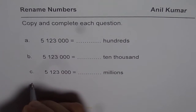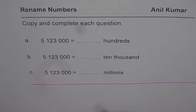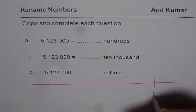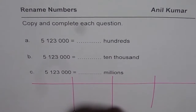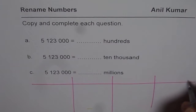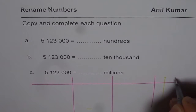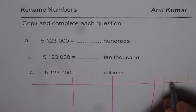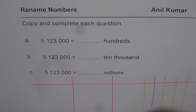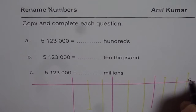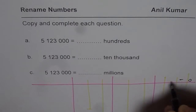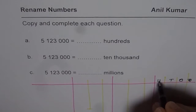Now to do this exercise, let's get back to the place value chart. Let me draw a place value chart here. We know there are three periods of three units each, and in each period we have ones, tens, and hundreds. So we have ones, tens, and hundreds — then again ones, tens, and hundreds — and then ones, tens, and hundreds.